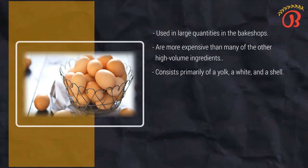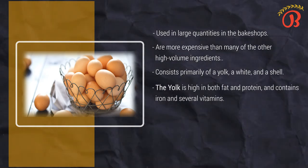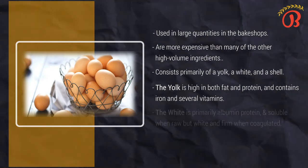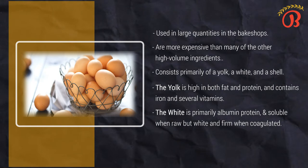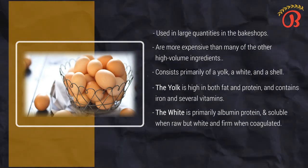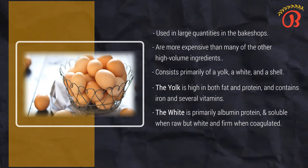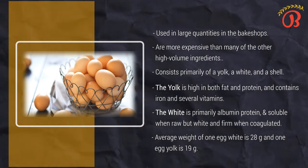In addition, it contains a membrane that lines the shell and forms an air cell at the large end, and two white strands called chalazae that hold the yolk centered. The yolk is high in both fat and protein and contains iron and several vitamins. Its color ranges from light to dark yellow depending on the diet of the chicken. The white is primarily albumin protein, which is clear and soluble when raw but white and firm when coagulated. The white also contains sulfur. The shell is not only fragile but also porous, allowing odors and flavors to be absorbed by the egg and allowing the egg to lose moisture even if unbroken. The average large egg weighs 47 grams without shell. The average weight of one egg white is 28 grams and one egg yolk is about 19 grams.